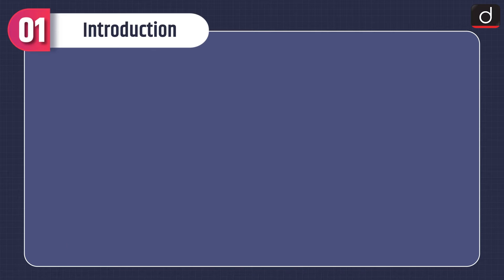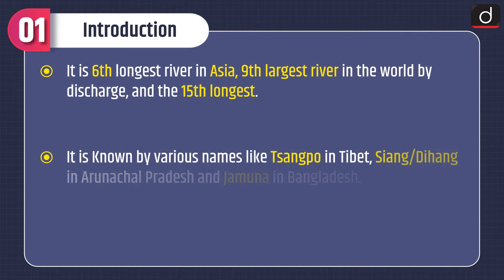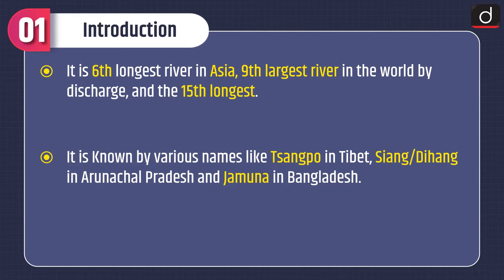It is the 6th longest river in Asia, the 9th largest river in the world by discharge, and the 15th longest. It is known by various names: Sangpo in Tibet, Siang or Dihang in Arunachal Pradesh, and Jamuna in Bangladesh.